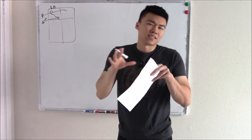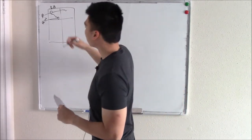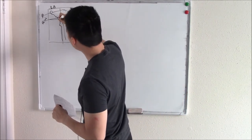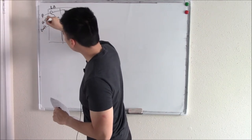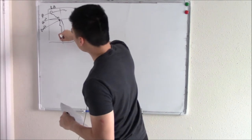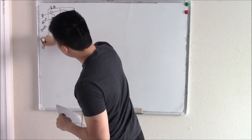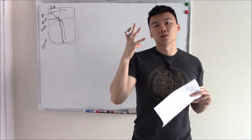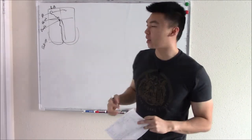The AV node kind of slows things down — it gives it a pause, and we need that pause. Eventually it sends the signal down to your ventricles via the bundle of His. The bundle of His has its left branch and its right branch, which connect to your Purkinje fibers, and that causes your ventricles to contract. That's what we covered last video.